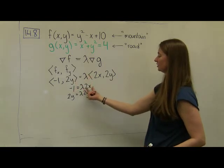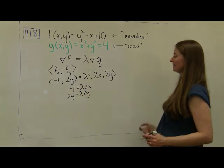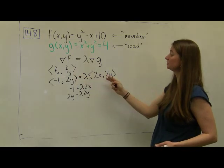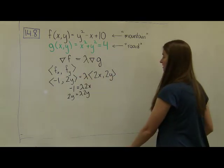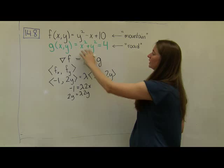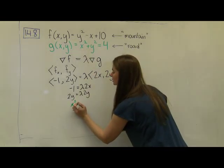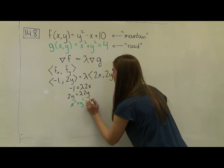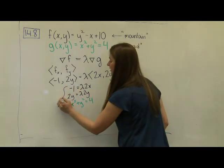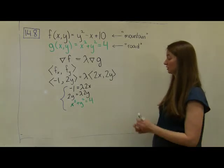We have three different unknown variables and only two different equations, so at this point we don't have enough information to solve this. We need one more piece of information. Not only does the gradient of f have to equal lambda times the gradient of g, we also have to have the constraint function hold. So I also have to have x squared plus y squared equals 4. At this point I have a system of three equations and three unknowns, and we can use whatever algebra skills we want to solve it.